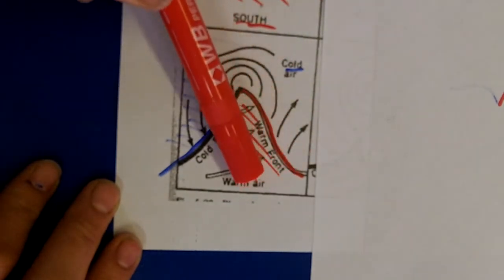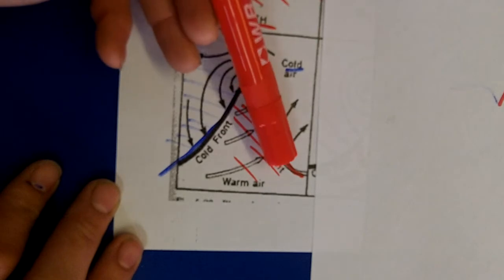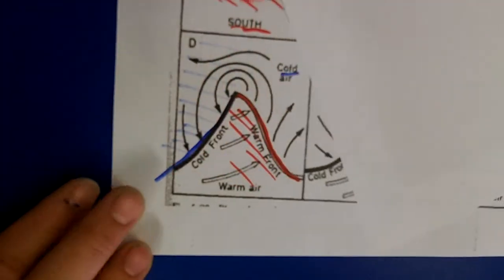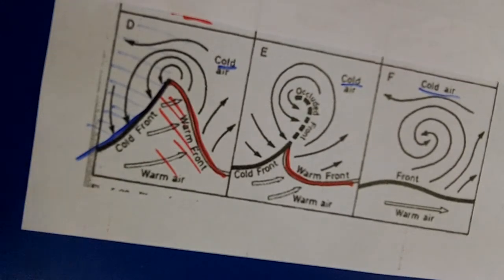You can have a warm front, warm sector, cold front. So you can then, what you need to look at is the type of weather that occurs at each point. It's worth noting that these things will eventually die out.